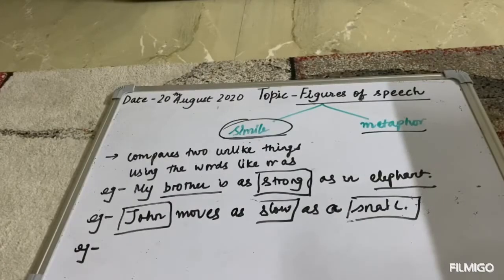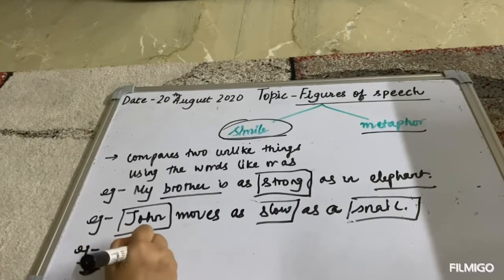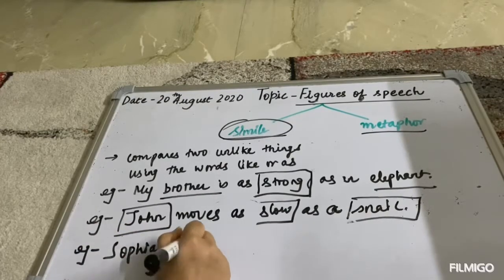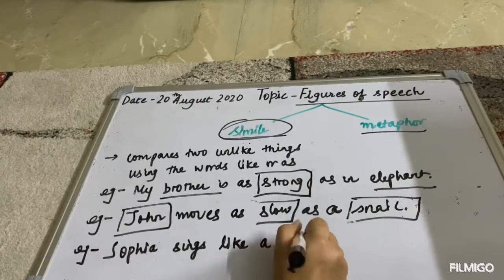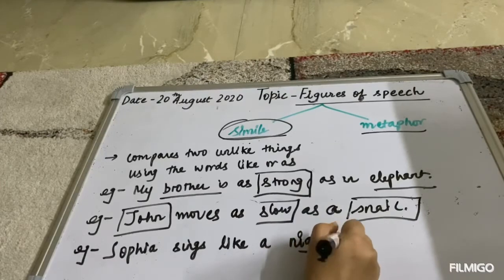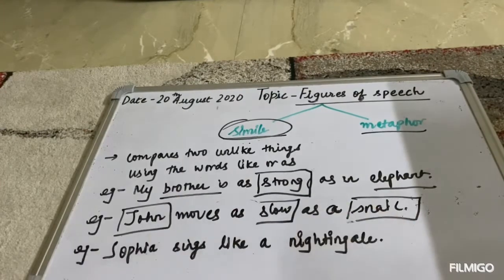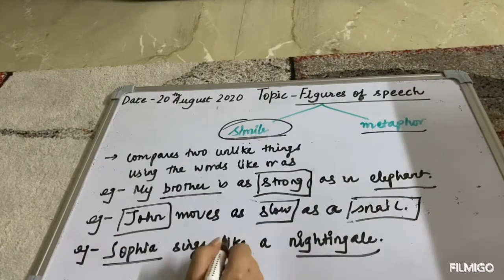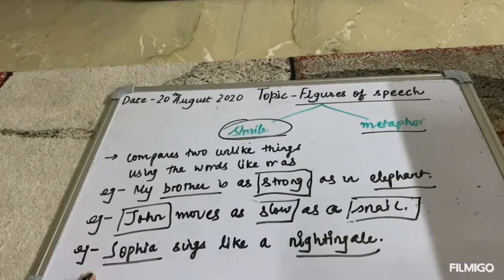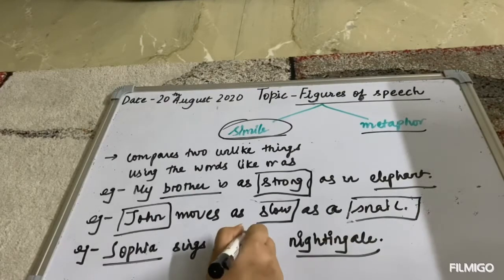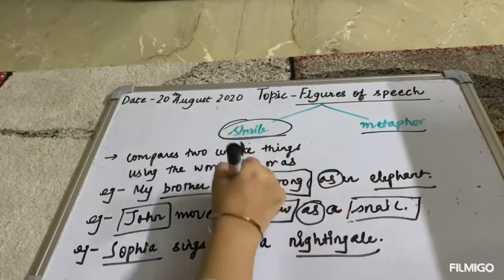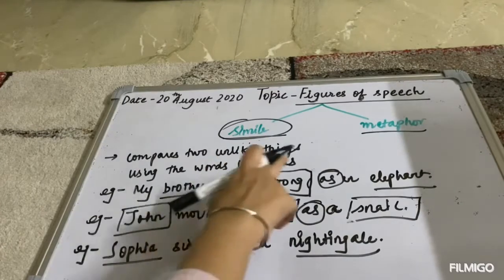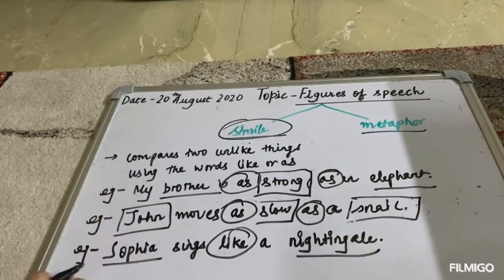The third example could be 'Sophia sings like a nightingale.' Here again there are two unlike objects: Sophia and a nightingale. As you can see in all three examples, in order to compare two unlike objects the words 'like' and 'as' have been used. These words show us that these three sentences are similes.